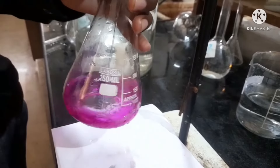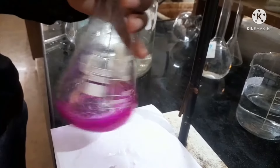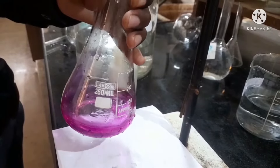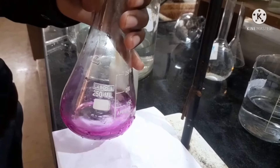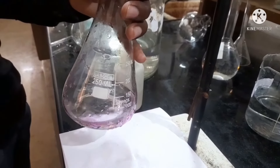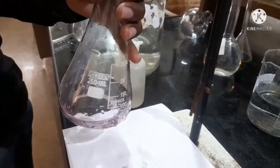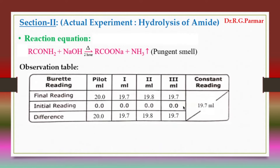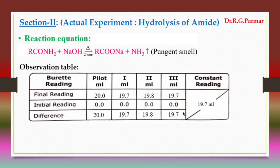We titrate the solution against 0.1 normal HCl. At the endpoint, the color change is light pink to colorless. The solution has become colorless here, and the burette reading is 19.7 ml.